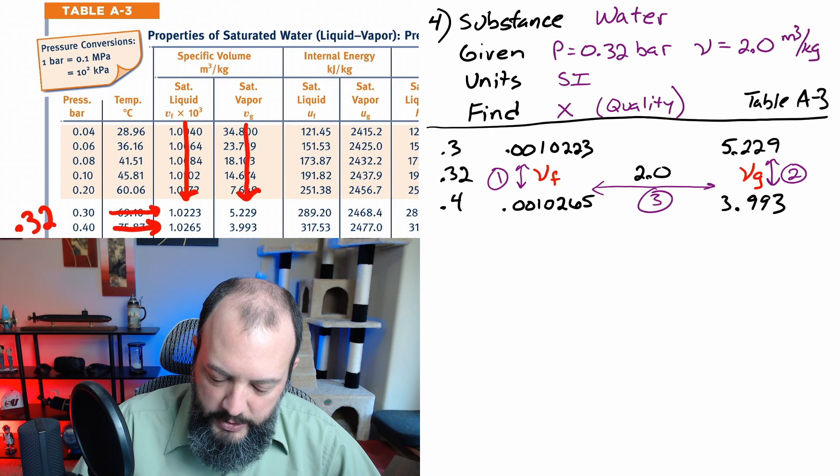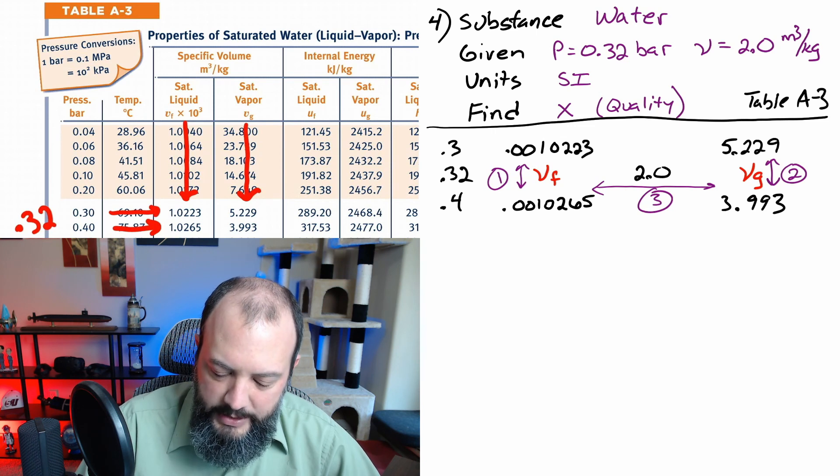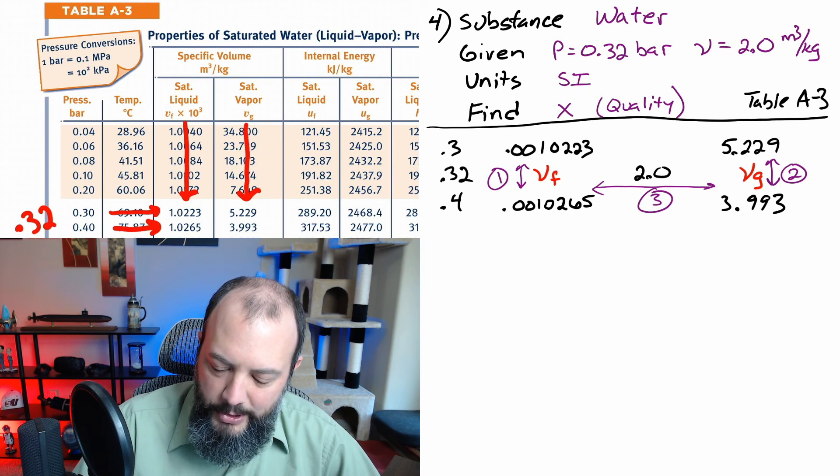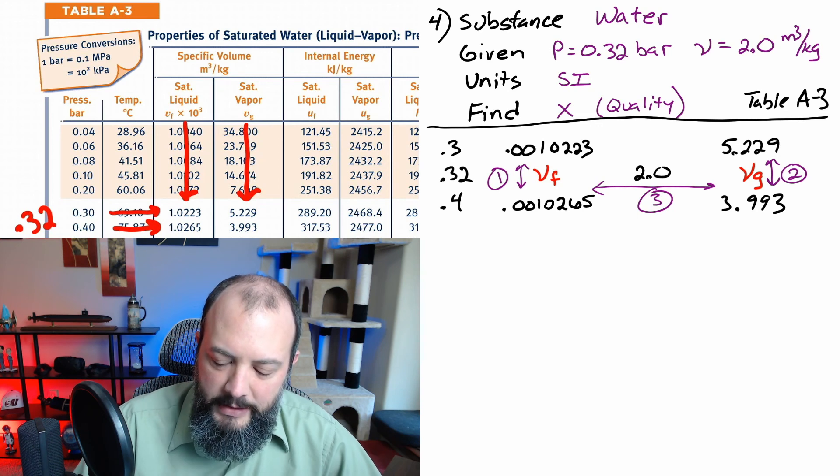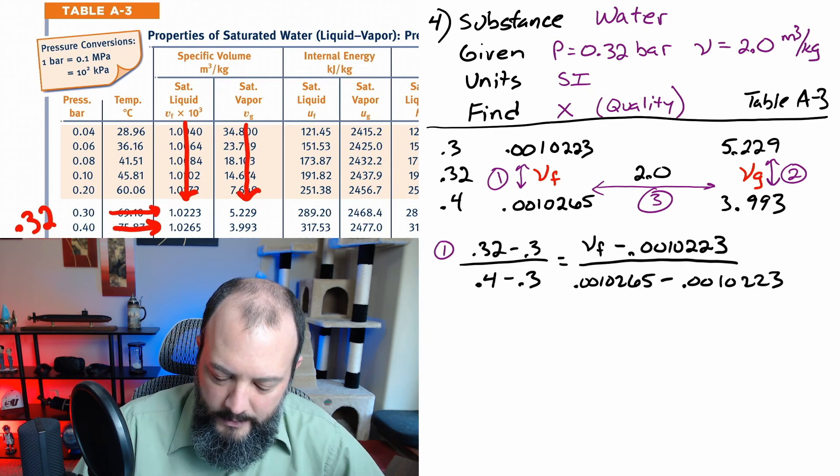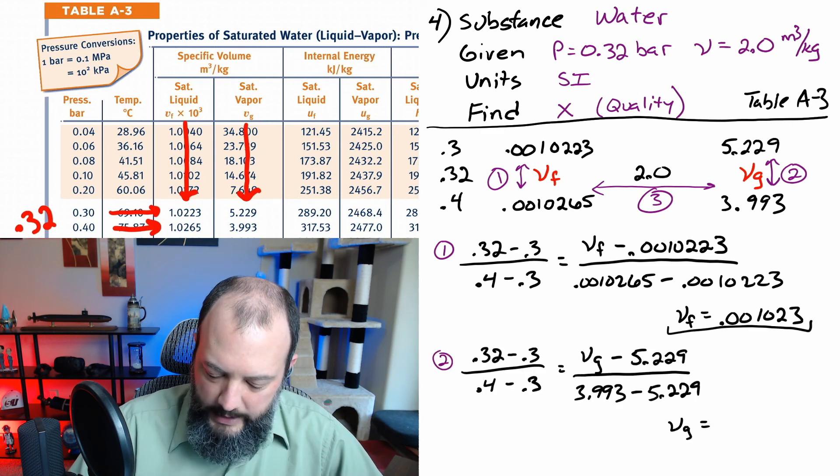So I started off by writing down all the numbers from the table that I'm going to use and then numbering the steps for the sequence. So first, I'm going to do a step of vertical interpolation to find my specific volume for the saturated fluid. Then I'm going to do a vertical interpolation to find the gas value. And then lastly, I'll use the 2.0 that I was given to find quality using the VF and VG values. I set up my first fraction using the pressure values on the left hand side in order to find specific volume for the saturated fluid that falls in between the 0.3 and 0.4.